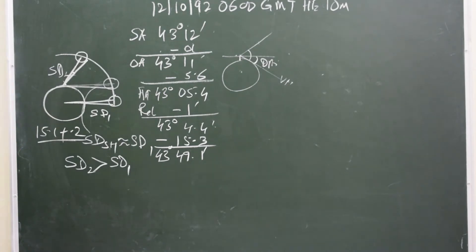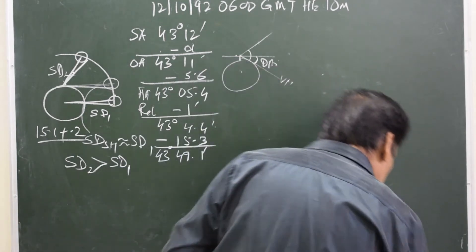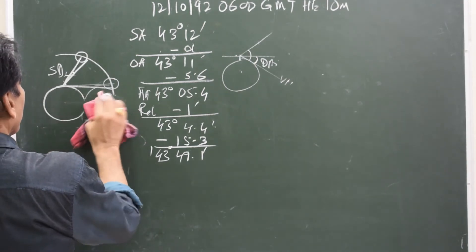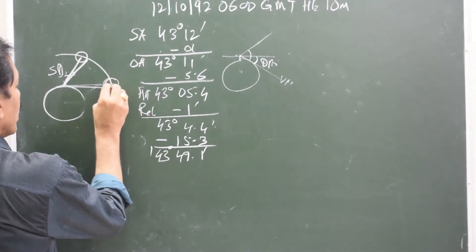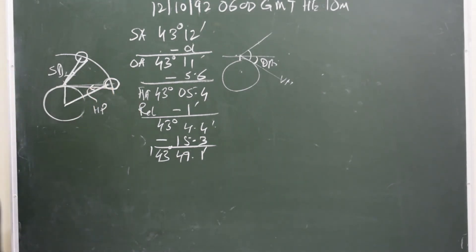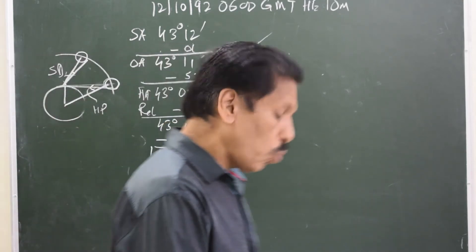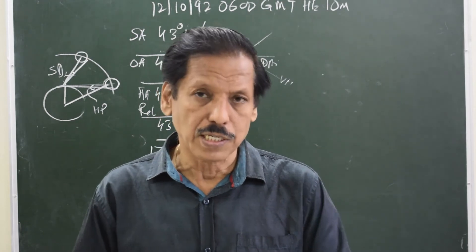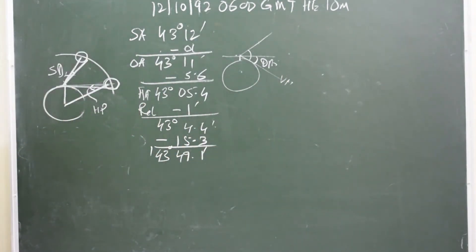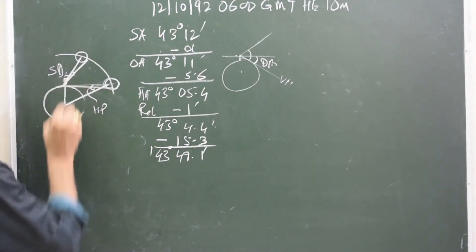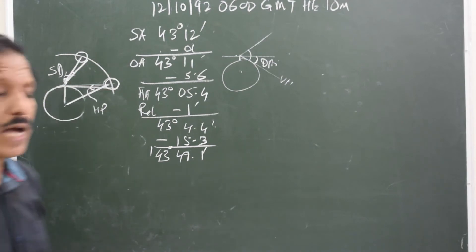Next correction is horizontal parallax. What is horizontal parallax? In the same diagram, when the moon is at the sensible horizon, the parallax that exists is called horizontal parallax. Parallax in altitude is the angle made at the center of the body by the radius of the earth through the observer. The observer is here, so the radius of the earth through the observer is this angle — that is horizontal parallax.